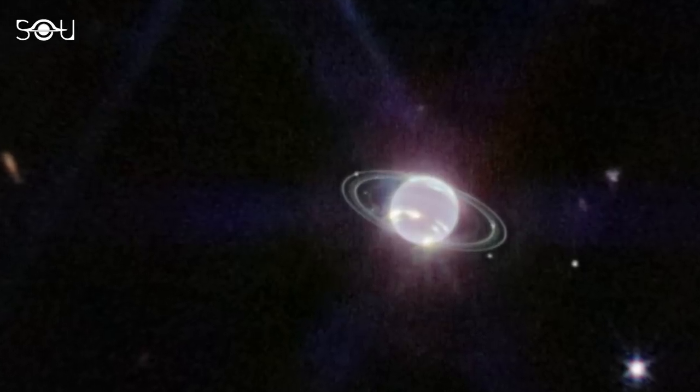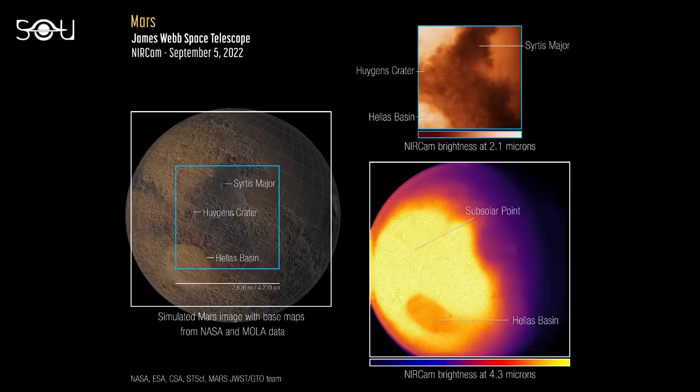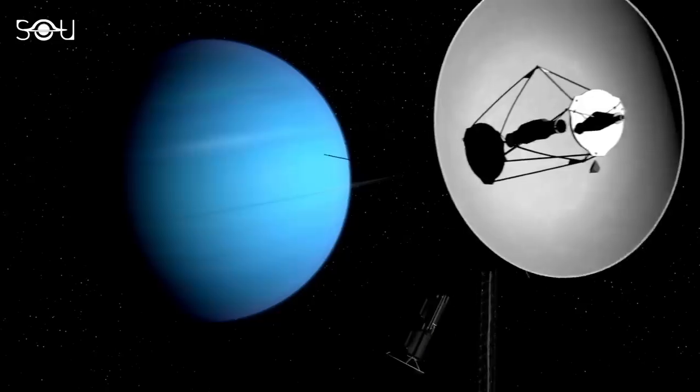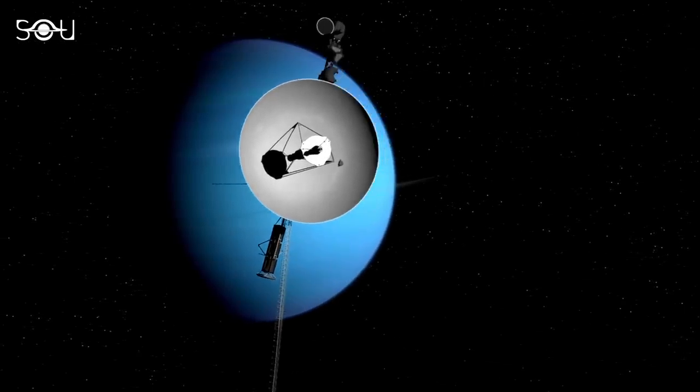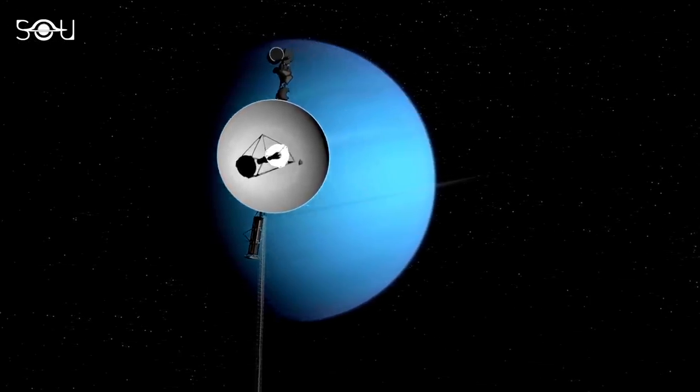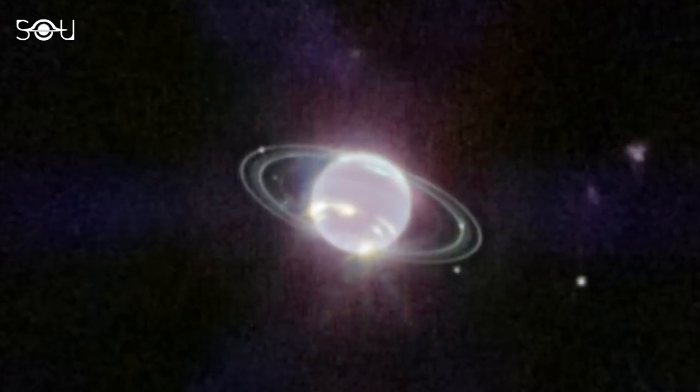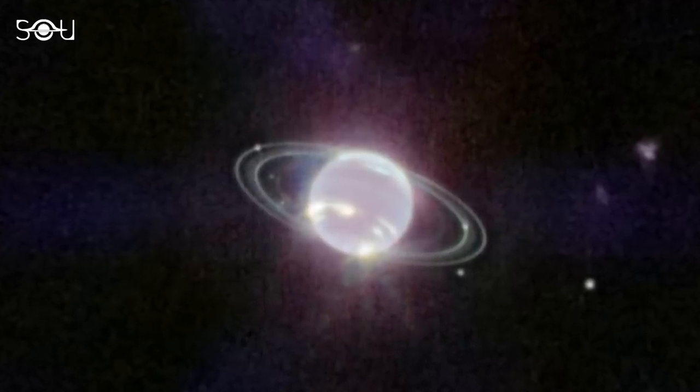Webb also imaged far-flung Neptune, Saturn's moon Titan, and our neighboring planet Mars. Neptune's rings were first studied by Voyager 2, the only spacecraft to have visited the ice giant. Hence, Webb provided the first view of the ice giant's rings in over three decades.